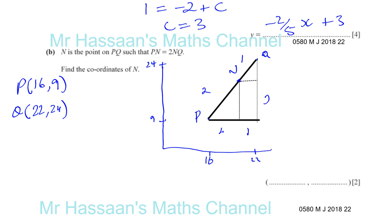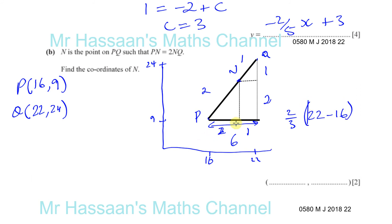The horizontal distance from P to Q is 22 minus 16, which is 6 units. The x-coordinate of N is 2 thirds of the way along, so 2 thirds times 6. The 6 and 3 cancel to give 2 times 2, which is 4. So N is 4 units away from P horizontally, meaning the x-coordinate of N is 16 plus 4, which is 20.